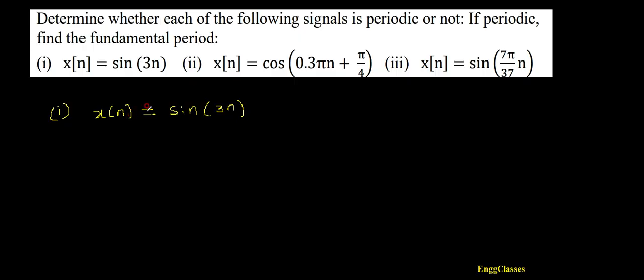We have a condition for a discrete time sinusoidal signal to be periodic. The angular frequency, represented as omega, must be a rational multiple of 2 pi. I would write 2 pi times m divided by capital N. This condition says that the angular frequency of a discrete time sinusoidal signal must be a rational multiple of 2 pi.